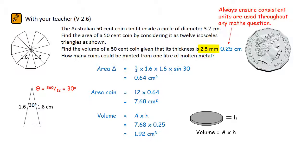The question finally asks us for the number of coins that could be minted from 1 liter of molten metal. Now we need to know here that 1 liter is equal to 1000 milliliters, and each milliliter of liquid takes up the same volume as 1 centimeter cubed. So that means that 1 liter of liquid is the same as 1000 centimeters cubed.